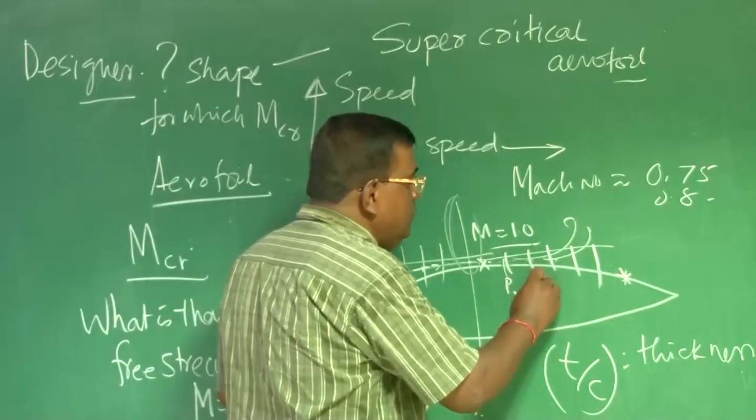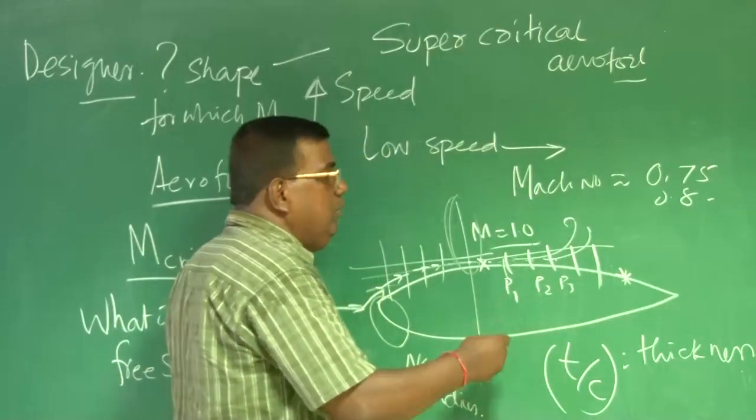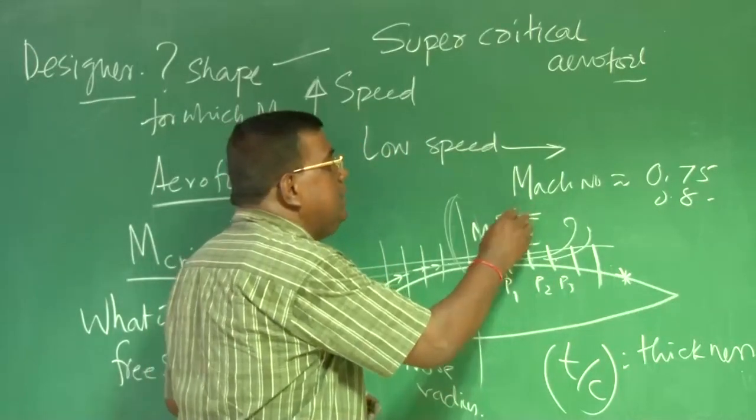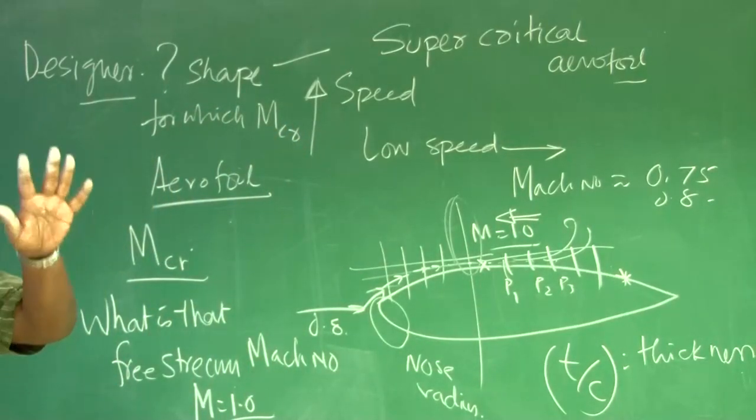The pressure at P1, P2, P3. So, P3 is more than P2, P2 is more than P1. So, there is an adverse pressure gradient. That is primarily responsible for flow separating.